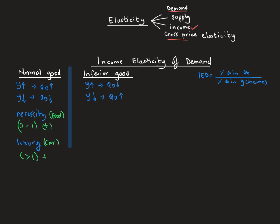With the inferior good case, I like to call it the 'two-minute noodle case.' If your income increases, you'd stop buying this type of product because you can afford better food. If your income decreases, you'd consume more of it because it's cheaper. As a student with a limited budget you buy cheap products, but once you get a job you buy better products and stop buying two-minute noodles. Inferior goods always have a negative elasticity — less than zero.